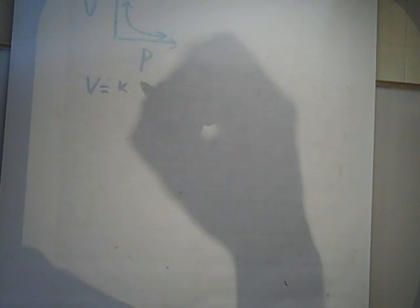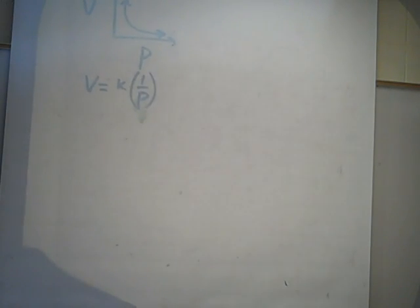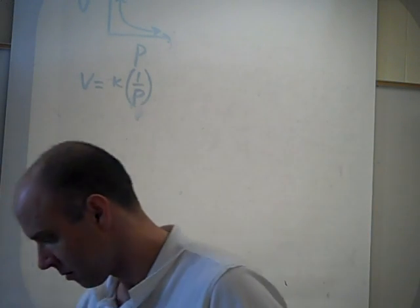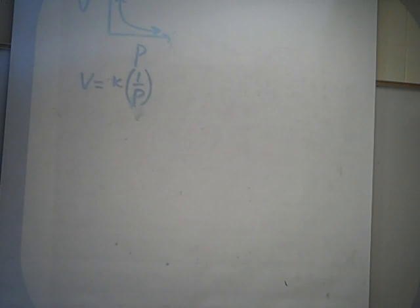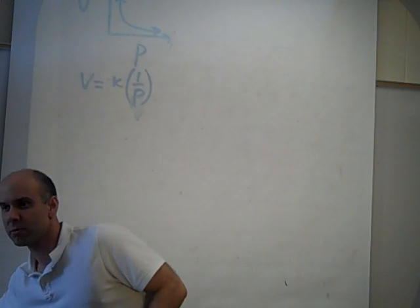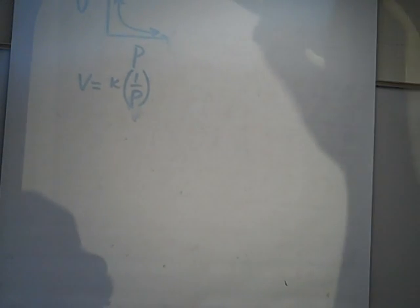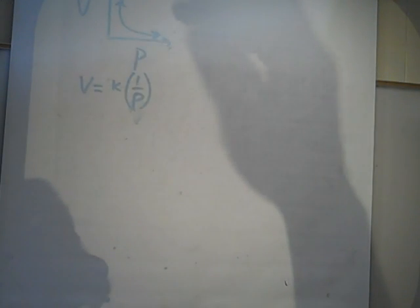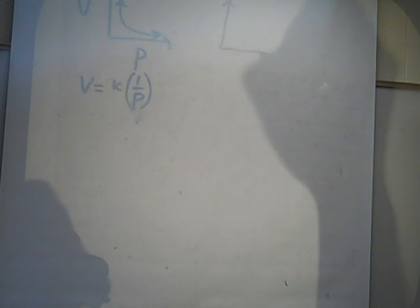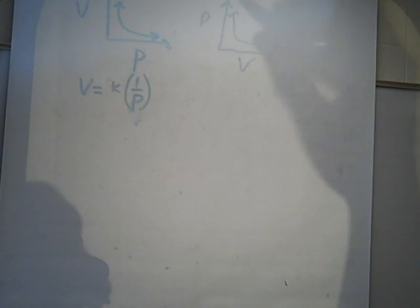We've already gone over Boyle's Law. The relationship between volume and pressure looks like that, and my equation was V equals K times 1 over P, since it's an inverse relationship. We put pressure on the y-axis because volume is the independent variable. But you can write these any way you want — in an experiment you put the independent variable on the x-axis, but if you're just writing, the graph doesn't change depending on what axis it's on.